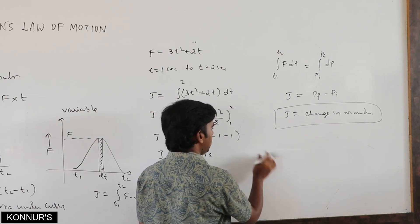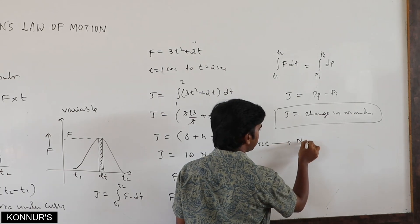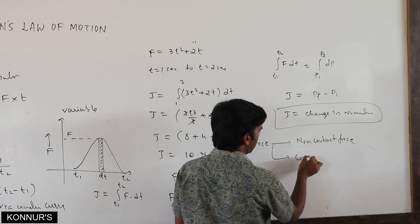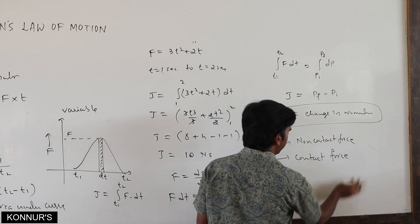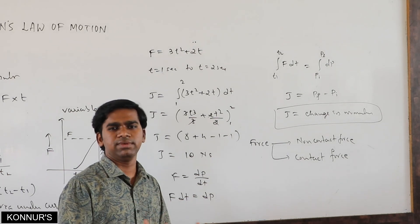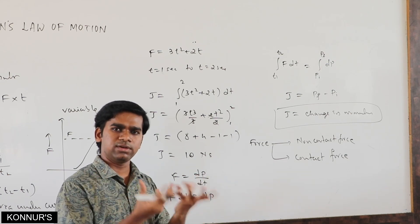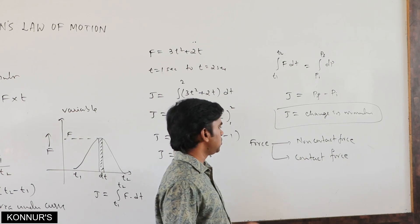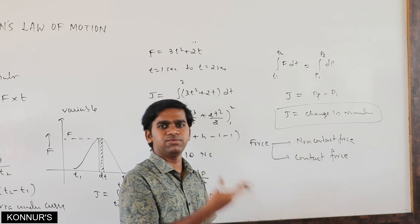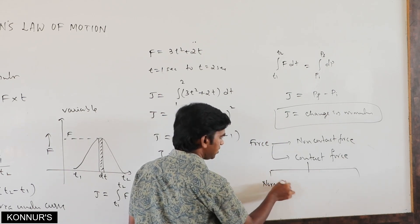There are types of forces. One is non-contact force and another is contact force. Non-contact forces include gravitational force and magnetic force — there is no contact between bodies but force still acts. Contact forces include normal force, tension force, and friction — these come into action only when bodies are in contact.